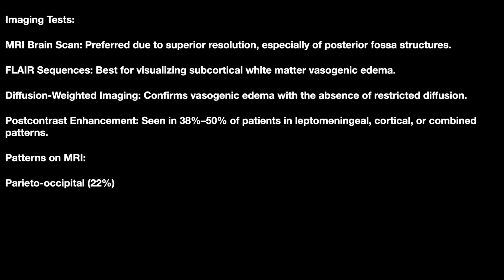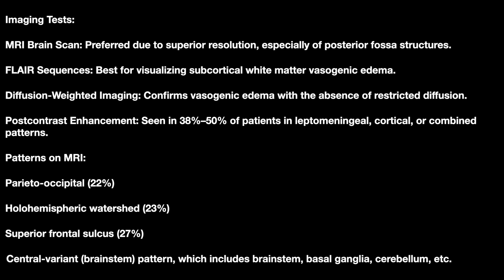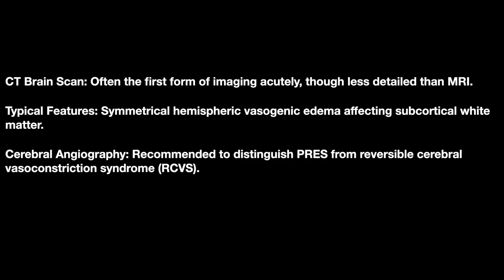The patterns seen on MRI include: parieto-occipital 22%, holohemispheric watershed 23%, superior frontal sulcus 27%, and central variant involving brainstem, basal ganglia, and cerebellum. CT scan is often the first form of imaging done acutely, though less detailed than MRI, and shows asymmetrical hemispheric vasogenic edema affecting subcortical white matter.